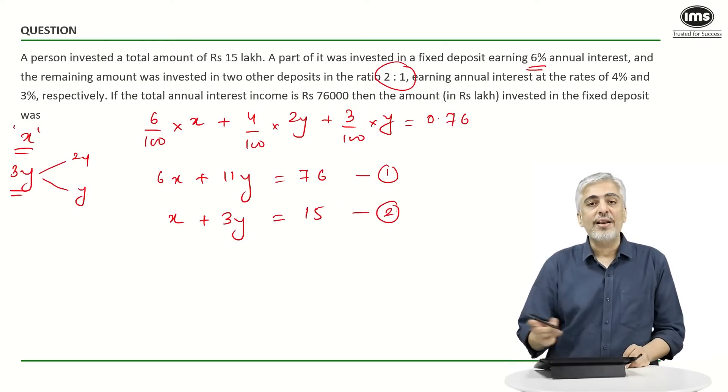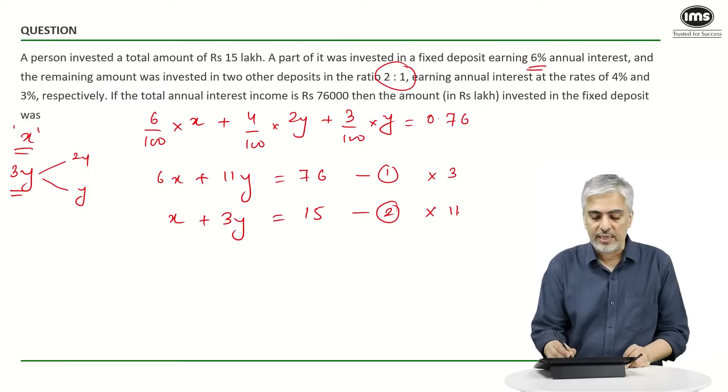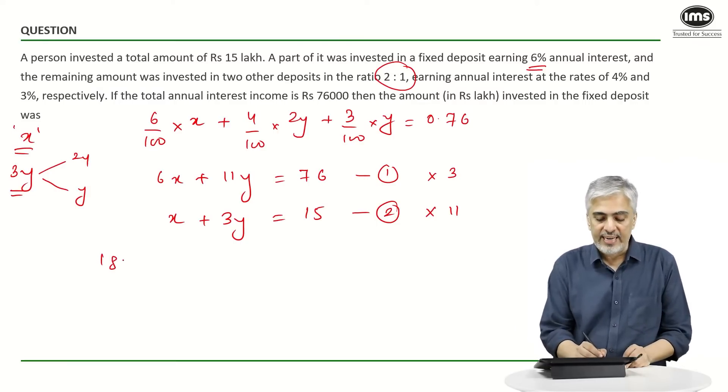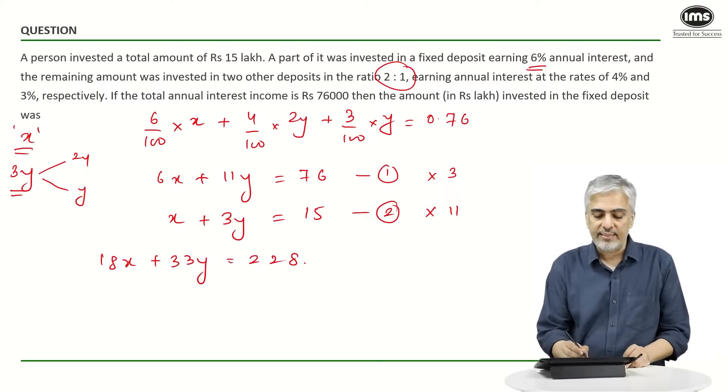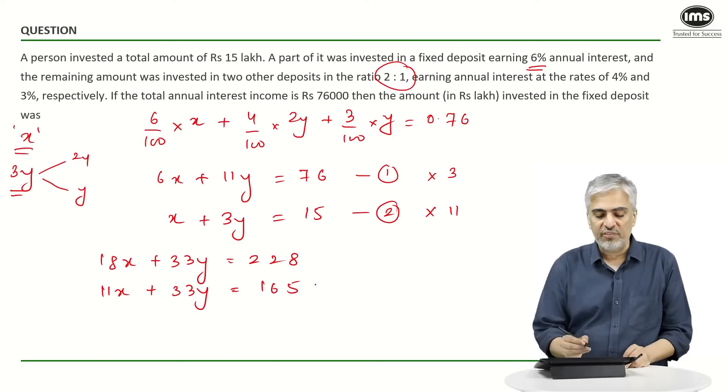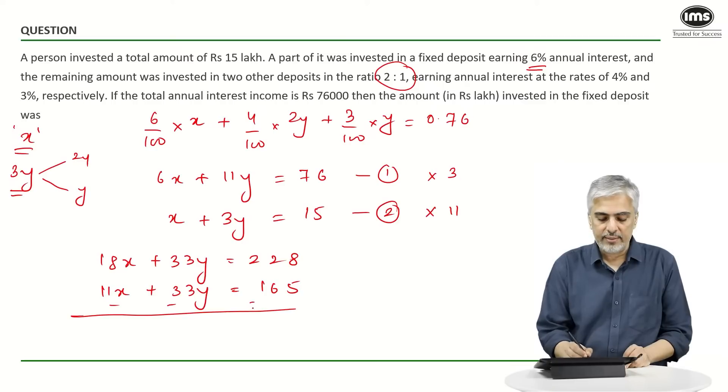I want to find x, so I need to eliminate y. Multiply this equation with 3 and this equation with 11 and subtract them. What will we get? We'll get 18x + 33y = 228, and the second equation will be 11x + 33y = 165. If I subtract both the equations, what do I get? I get 7x.